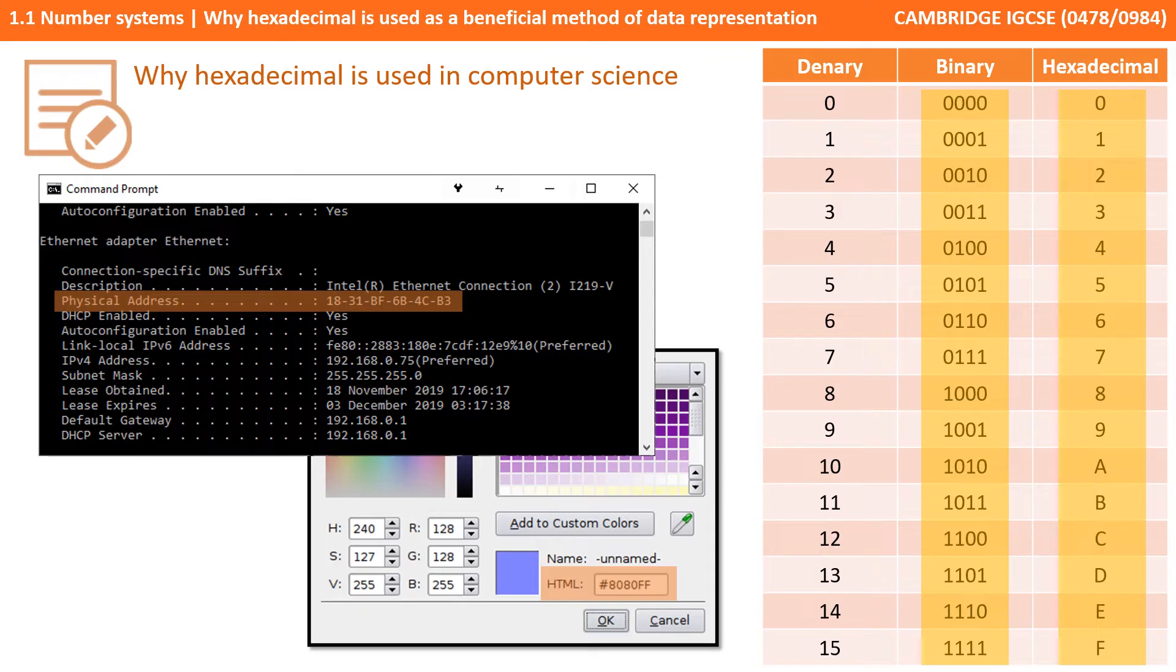With hexadecimal there are 16 numbers, 16 possible permutations from 0 to 15, and we can represent the numbers 0 to 15 in binary using 4 bits from 0000 through to 1111.